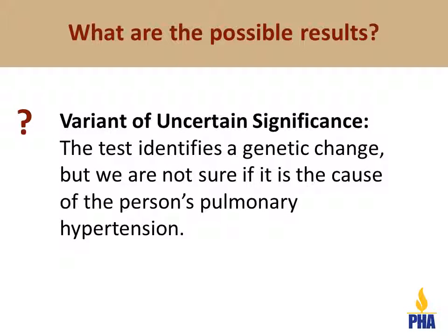The third possible test result is a variant of uncertain significance. This means that the genetic test found a genetic change, but it is unclear if it is a disease-causing mutation or a normal variation that has nothing to do with pulmonary hypertension. If a variant is found, a genetic counselor or geneticist will discuss the steps to be taken to try to better understand the variant.